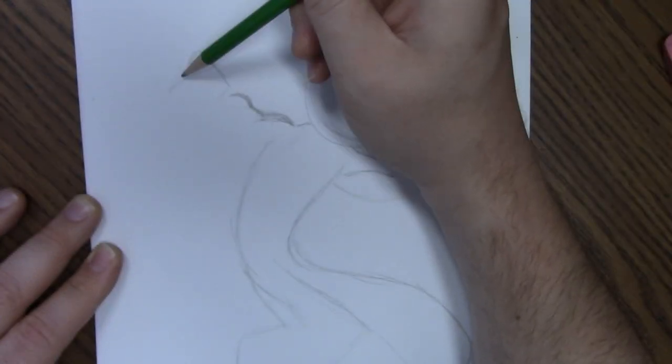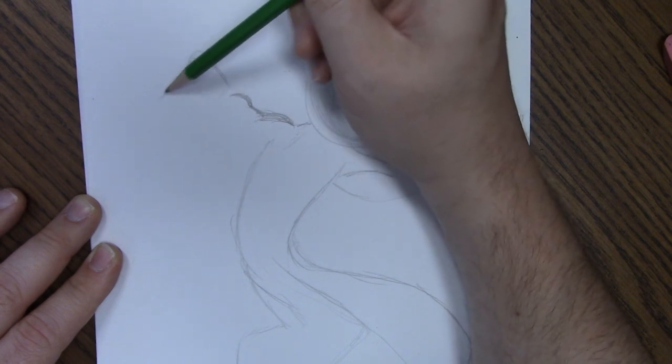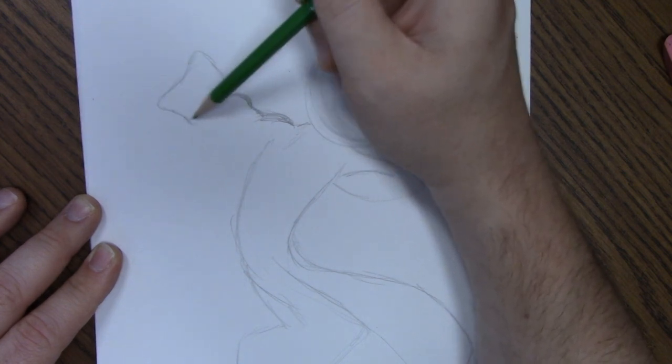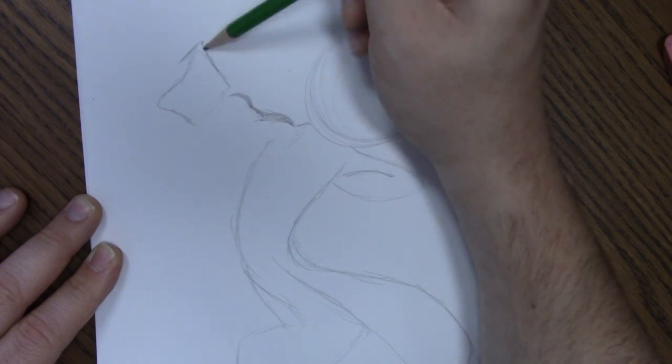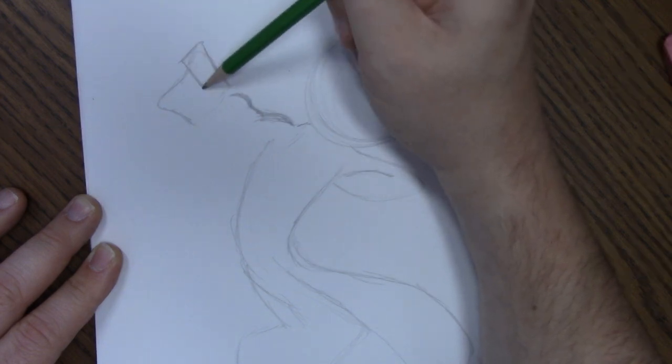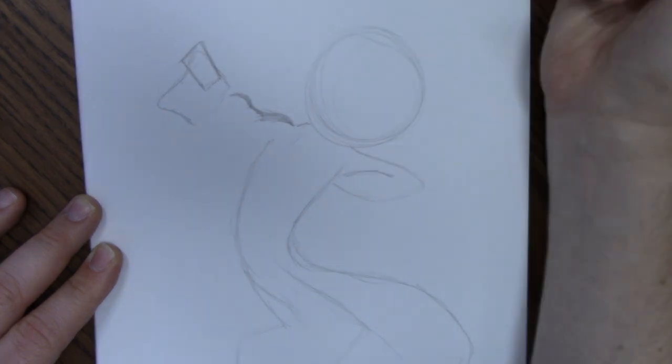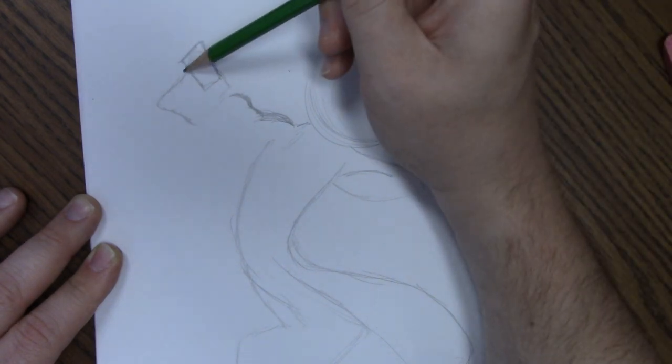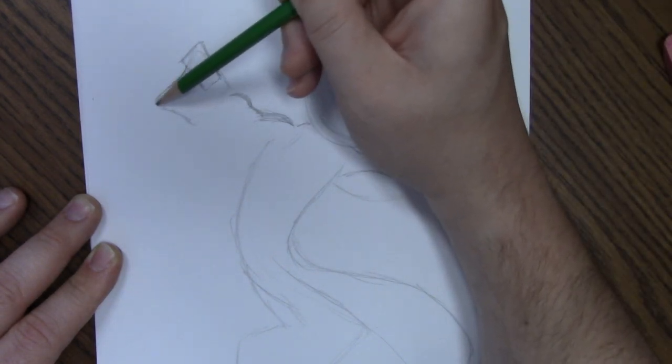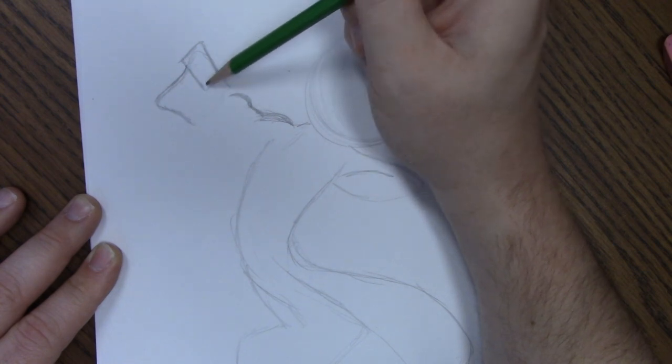So it's sort of like this wonky rectangle shape. That's going to be her main pointer finger, right? And then all the fingers after that are all going to be contained inside this one shape.